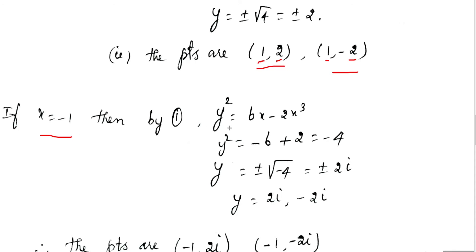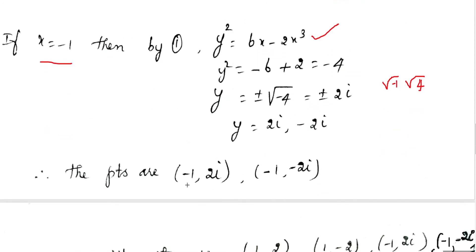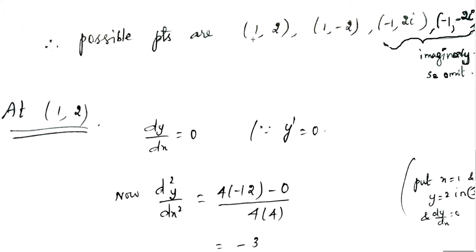When x = -1, finding the value of y gives y² = -4, so y = ±2i. This gives four points: (1, 2), (1, -2), (-1, 2i), and (-1, -2i). The last two points are complex, so we omit them and work with the two real points: (1, 2) and (1, -2).